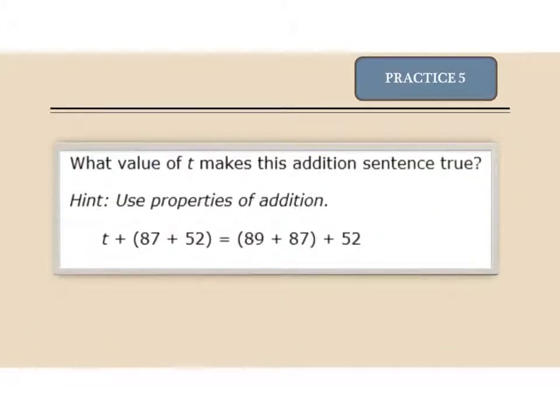Practice problem 5. What value of T makes this addition sentence true? Hint, use the properties of addition. Yes, it is the associative property of addition. But just look at the numbers and see which one is missing that would make that sentence true.